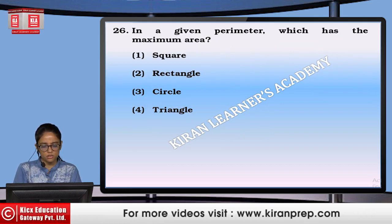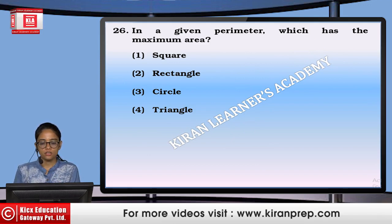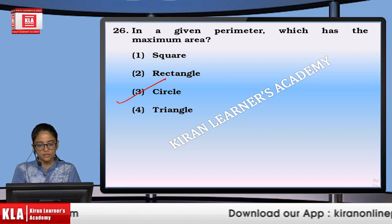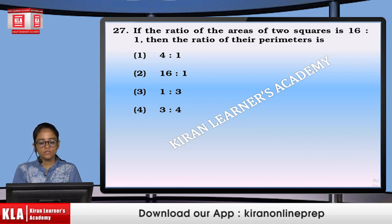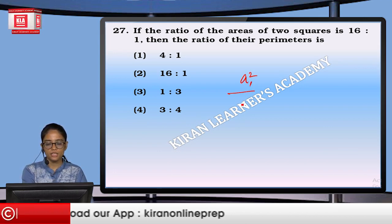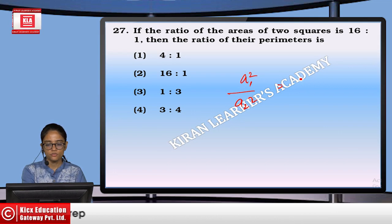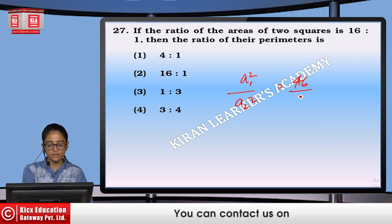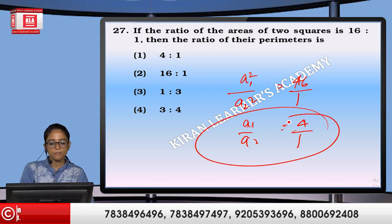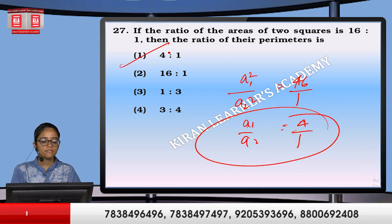For a given perimeter, the maximum area is covered by a circle. If the ratio of the areas of two squares is 16 to 1, then A1²/A2² = 16/1, so A1/A2 = 4 to 1 — that is the ratio of their perimeters. Option number 1.